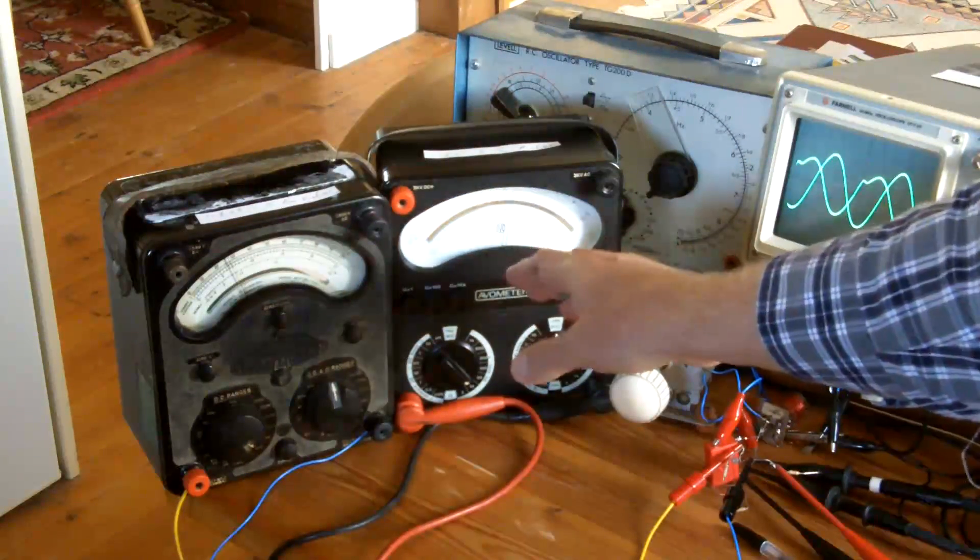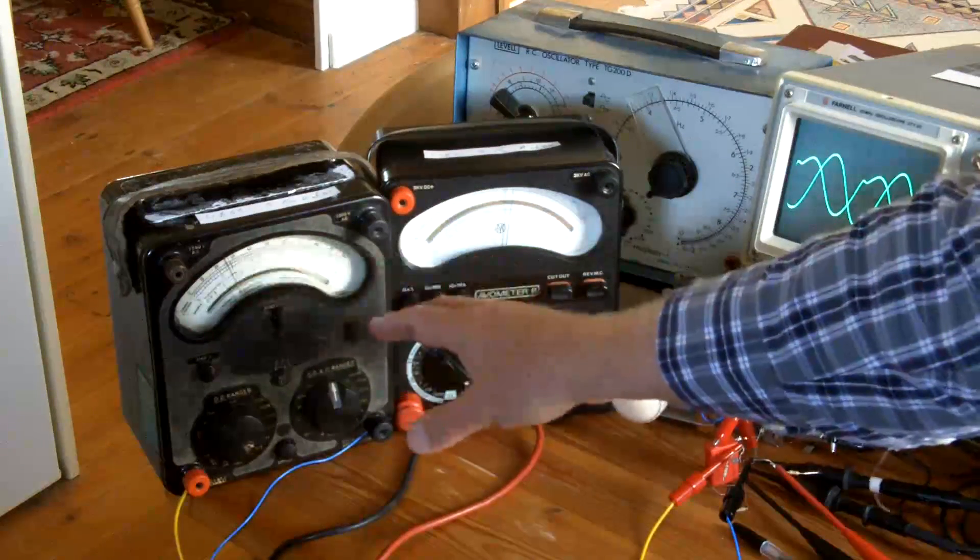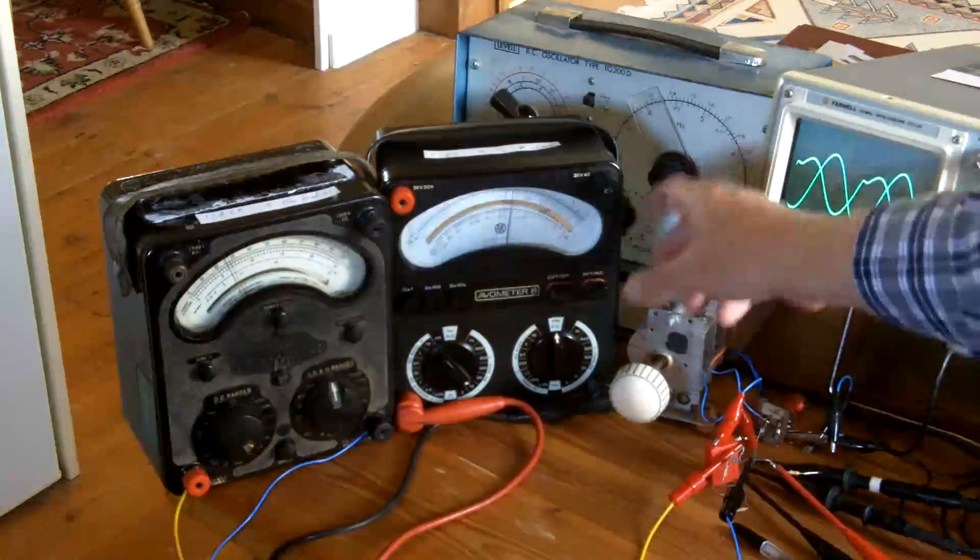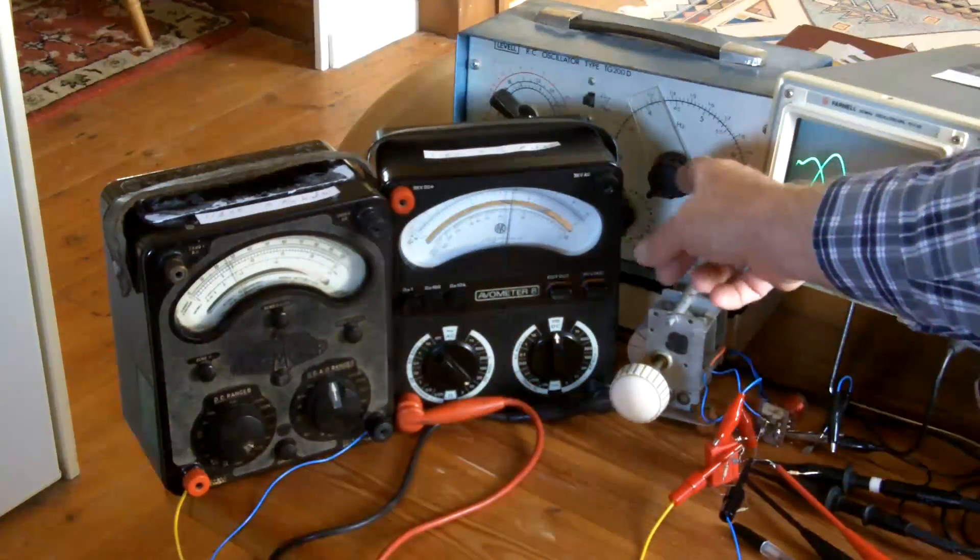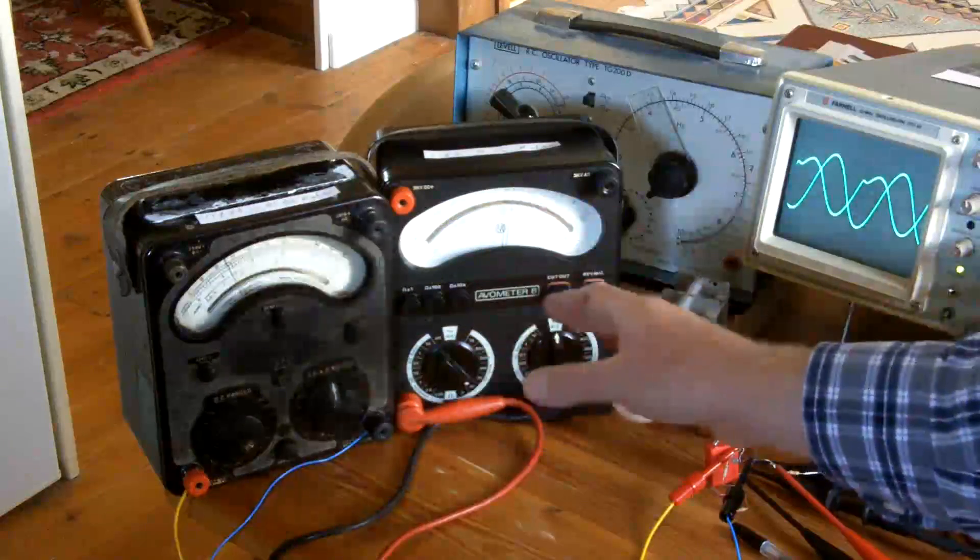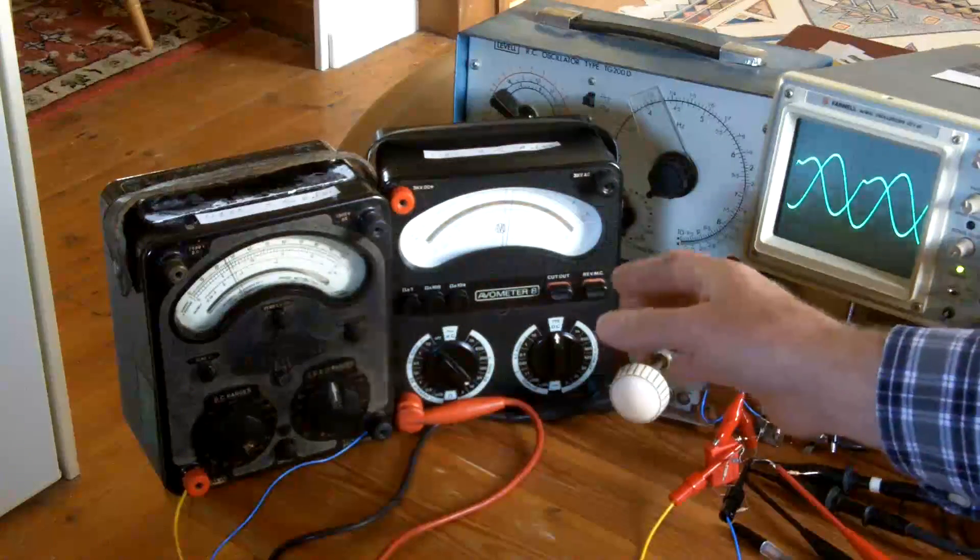But there you could see the effective AF signal coming out of a varying frequency. So a frequency modulated signal producing AC. I hope that is clear. It is the best I can do.